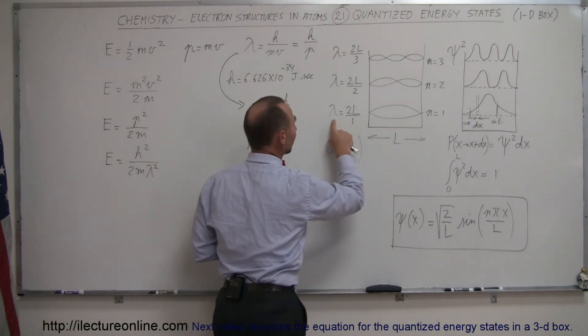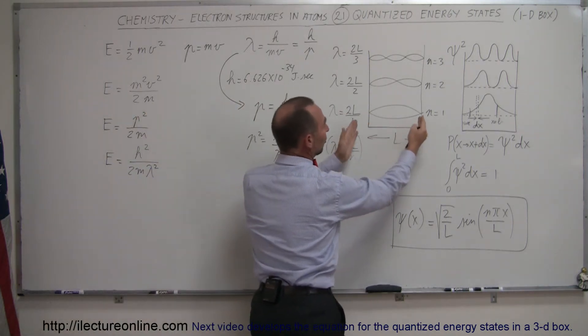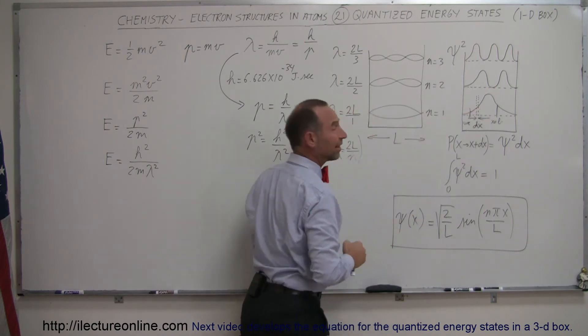In the first energy state, the wavelength is twice the length of the box. Notice this is just a half wavelength, so the wavelength would be twice the length of the box.